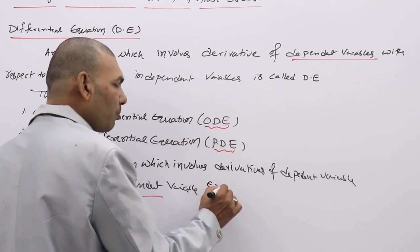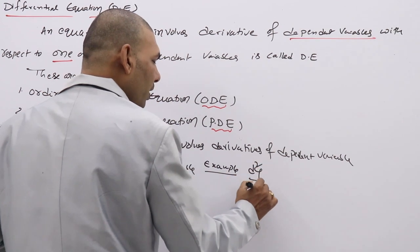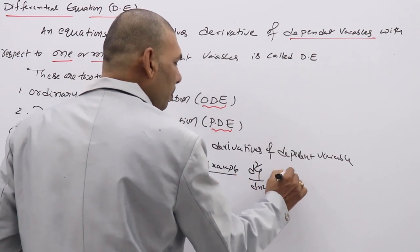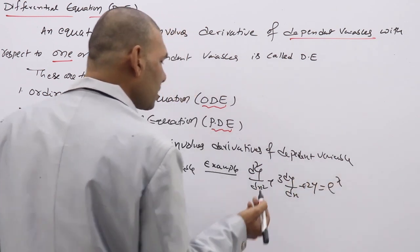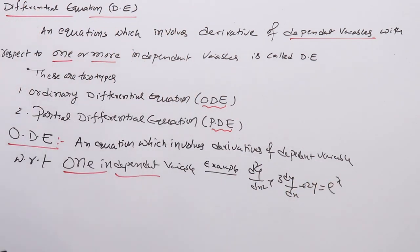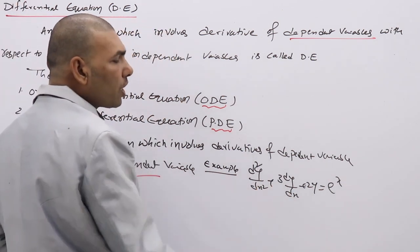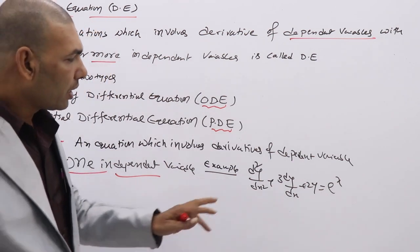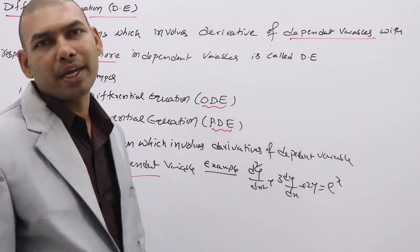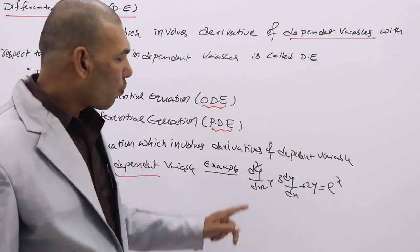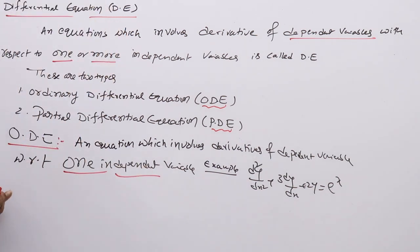For example: d²y/dx² + 3(dy/dx) + 2y = eˣ. This is an ordinary differential equation because the dependent variable is y and there is only one independent variable, x. Another example: dy/dx = x²y² / (2xy). This is also an ordinary differential equation — only one independent variable x.